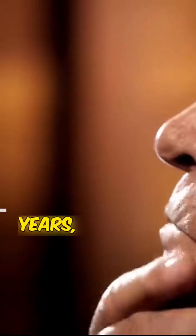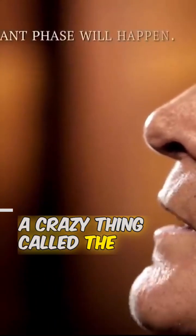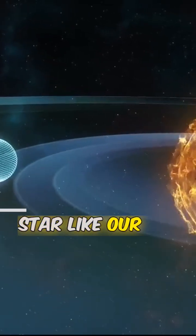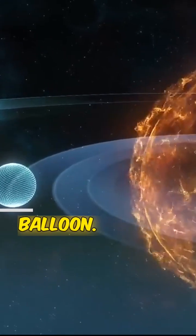In about 7.5 billion years, scientists predict that a crazy thing called the red giant phase will happen. This phase is when a star like our sun starts to expand like a giant balloon.